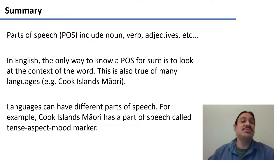In summary, parts of speech include labels like nouns, verbs, adjectives, and so forth. In many languages, for example, in English, the only way to know for sure what your part of speech is, is to look at your word and its context. At the minimum, the preceding word, and the following word. This is also going to be true of many languages, such as Cook Islands Maori. Languages can have different parts of speech. For example, to correctly describe Cook Islands Maori, we need something called a tense aspect mood marker that English doesn't have. In the next two videos, we're going to code a support vector machine that can tell you the parts of speech of Cook Islands Maori sentences. Let's do it.